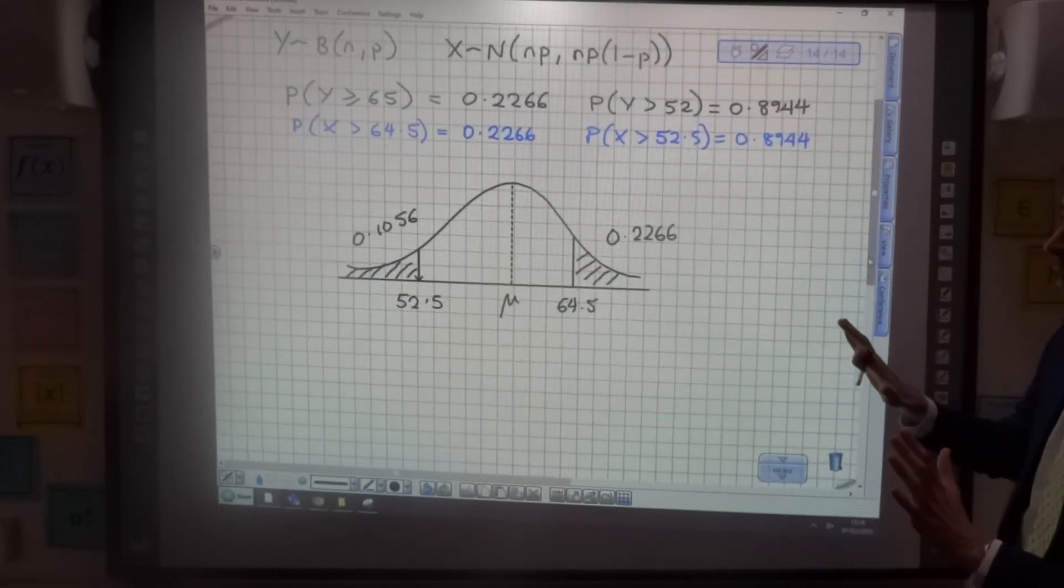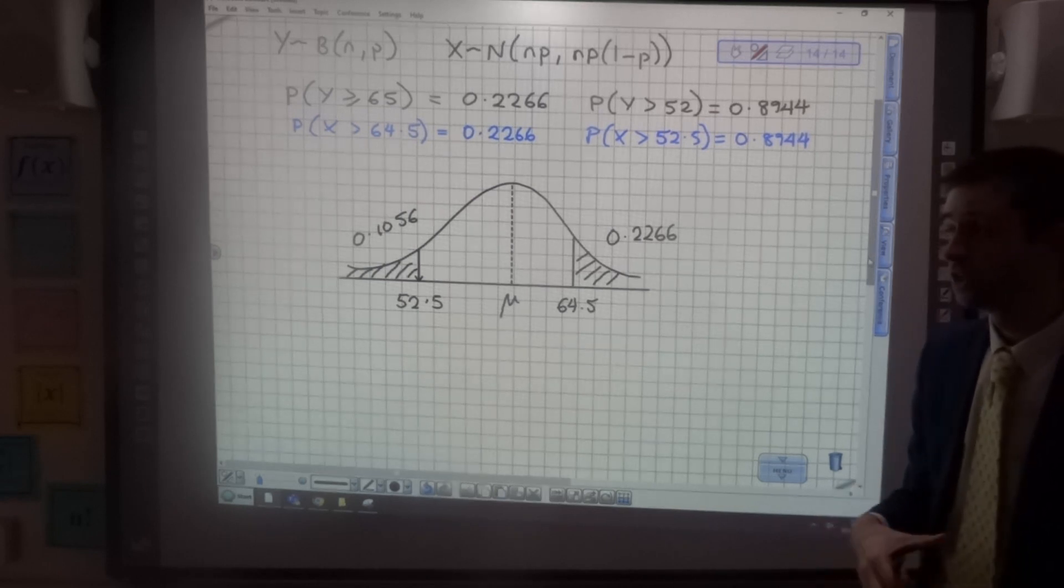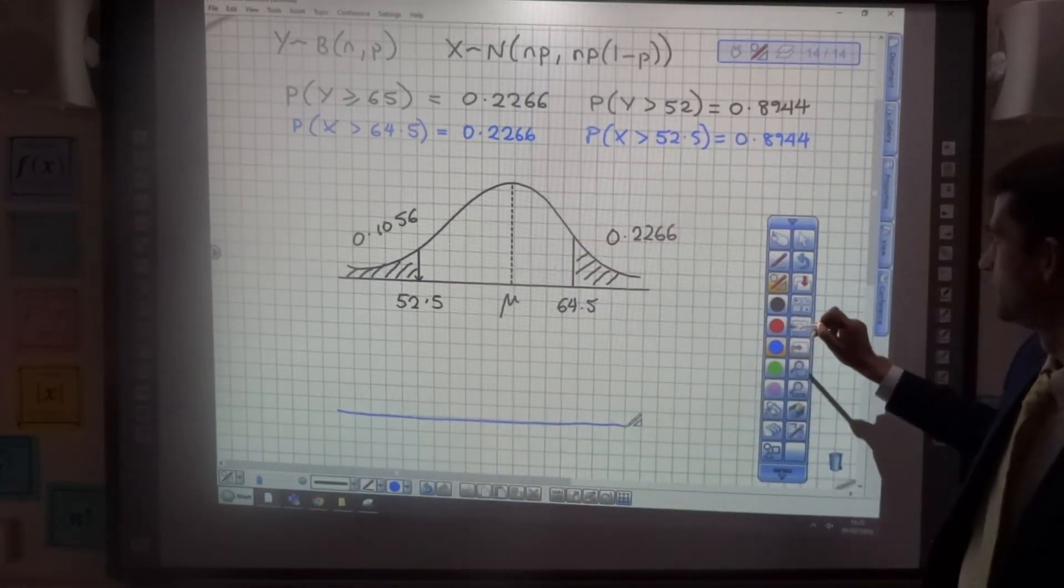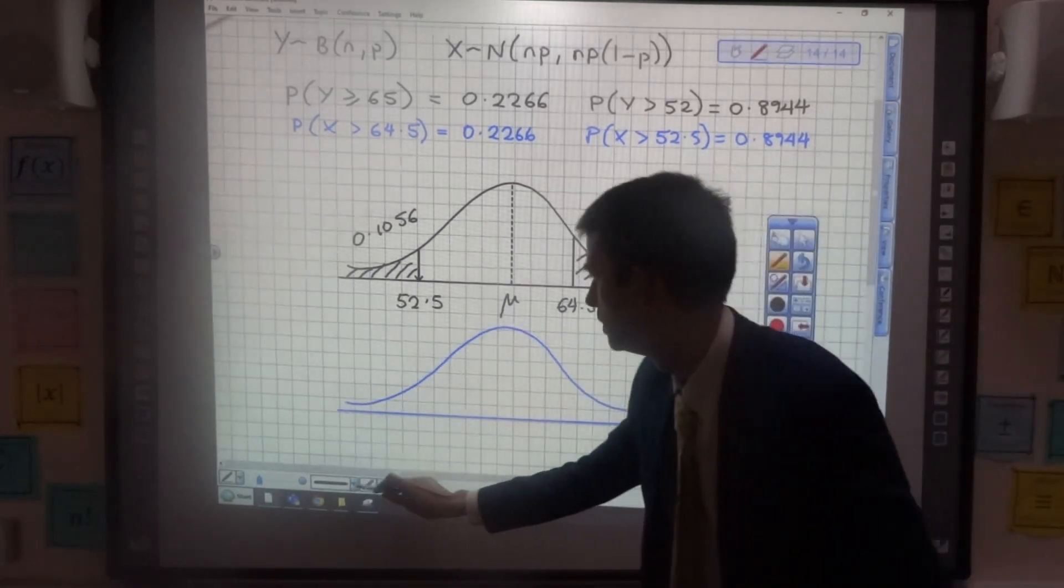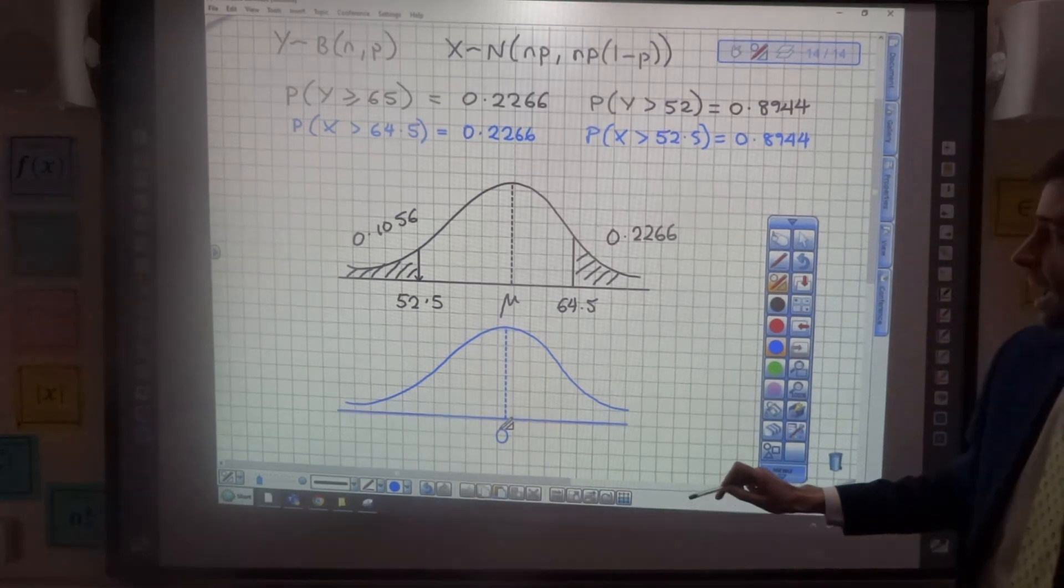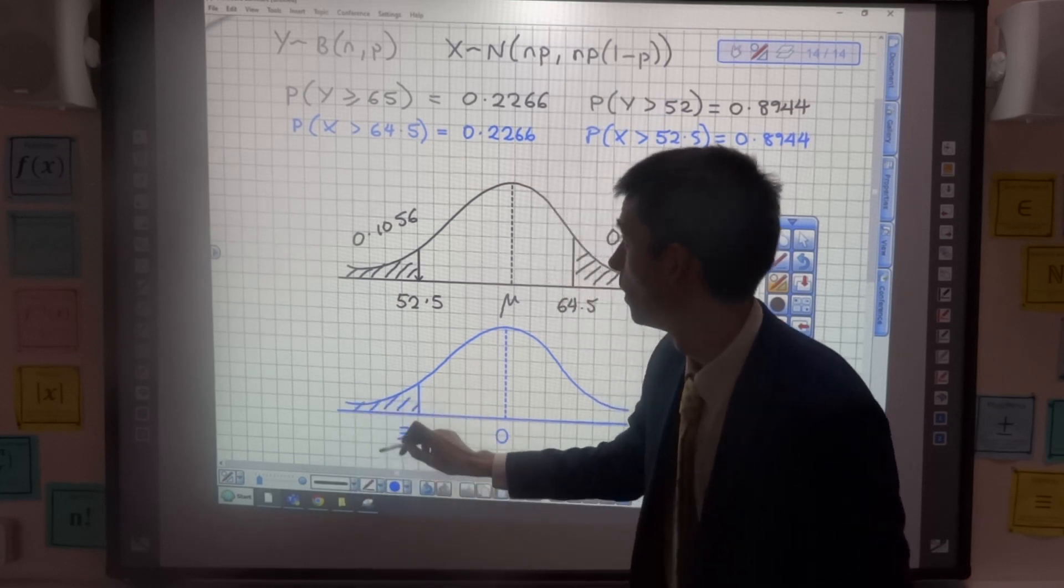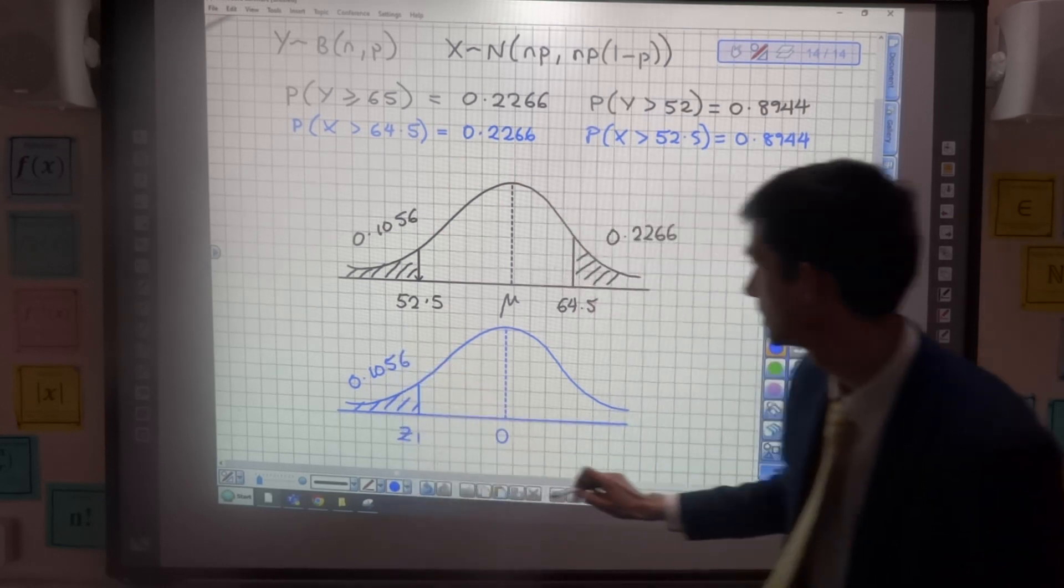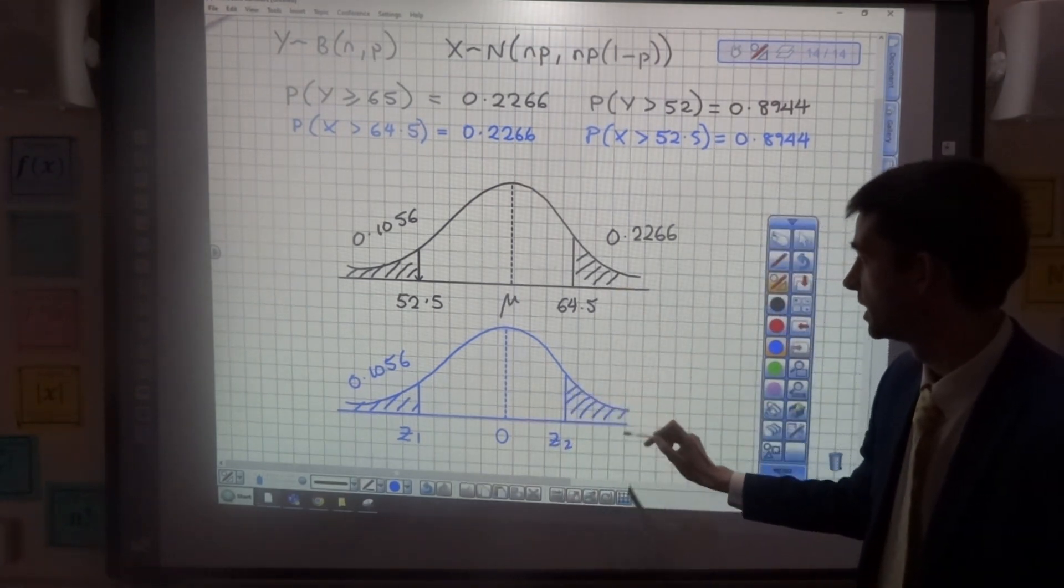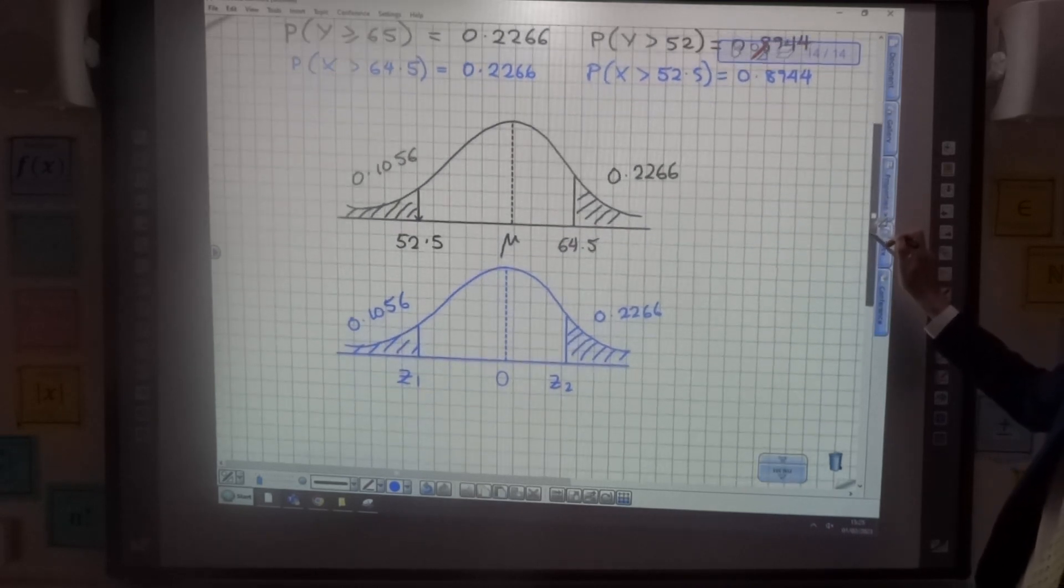So I've got the normal distribution of X drawn with the areas shown. Because I've got an unknown mean and an unknown standard deviation, I'm going to have to use z, the standardised normal distribution. I'm going to draw the same normal distribution underneath in blue. Pop in a line for the mean of 0. And I'm going to call this one here, z1, to represent the one that's got an area to the left of 0.1056. And a line in here, z2, corresponding with the 64.5, which has an area to the right of 0.2266.